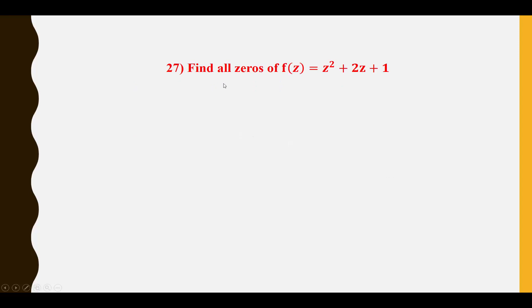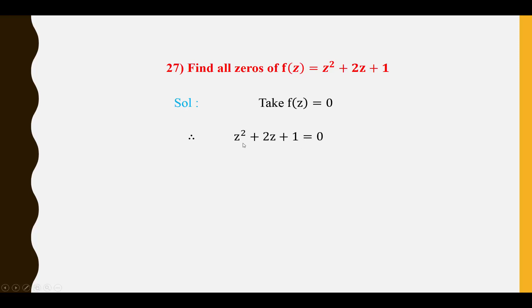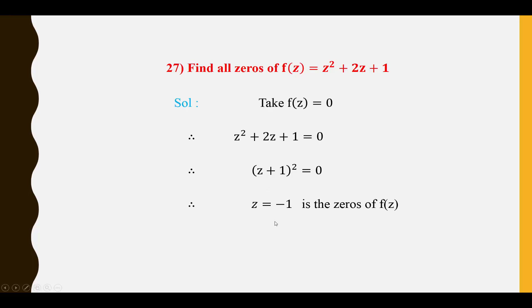Twenty-seventh question: Find all zeros of F(Z) = Z² + 2Z + 1. Setting F(Z) = 0: Z² + 2Z + 1 = 0, which factors as (Z + 1)² = 0. Therefore Z = −1 is a zero of F(Z).